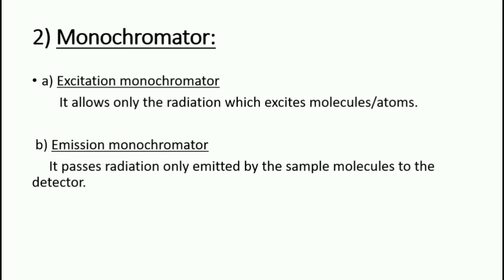There are two types of monochromator. First, the excitation monochromator allows only the radiation which excites molecules or atoms. Second, the emission monochromator passes radiation only emitted by the sample molecules to the detector. These are the basic differences between these two monochromators.